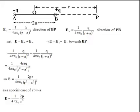That means the electrical field versus R graph for a dipole will be more steeper as compared to electrical field versus R graph for a point charge.